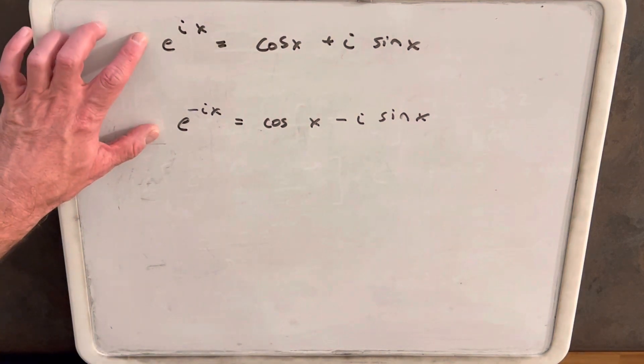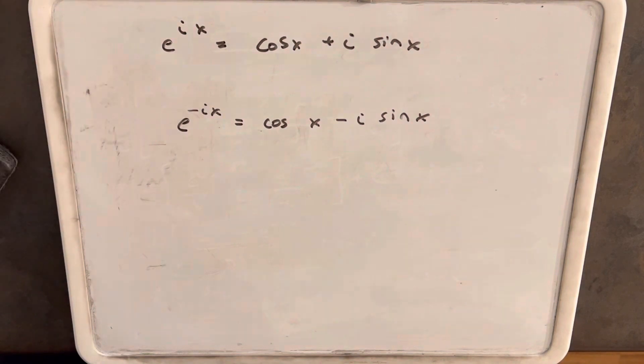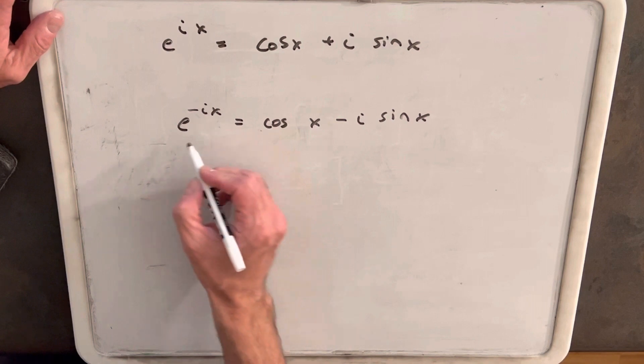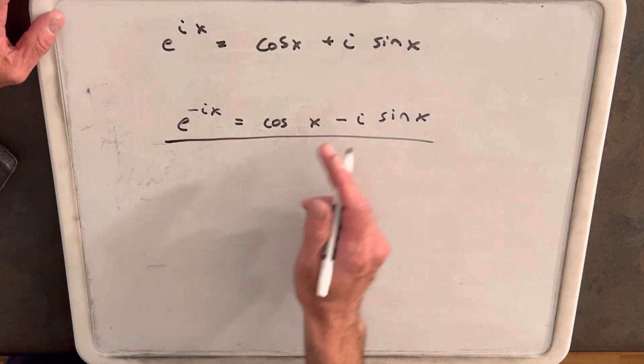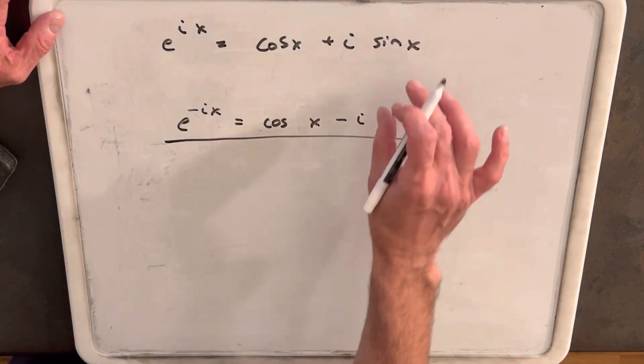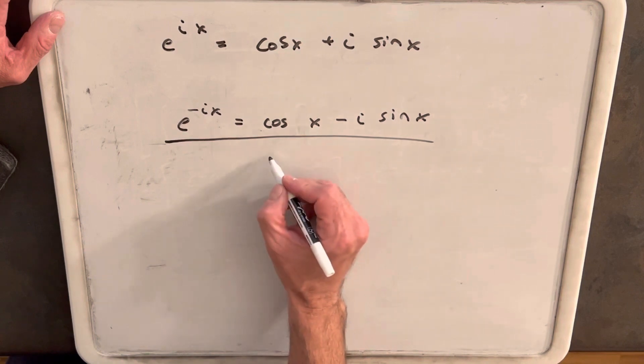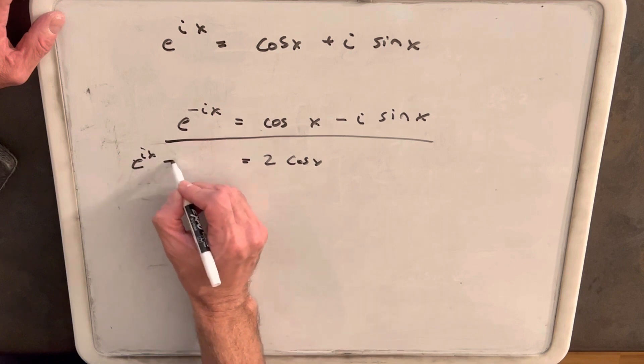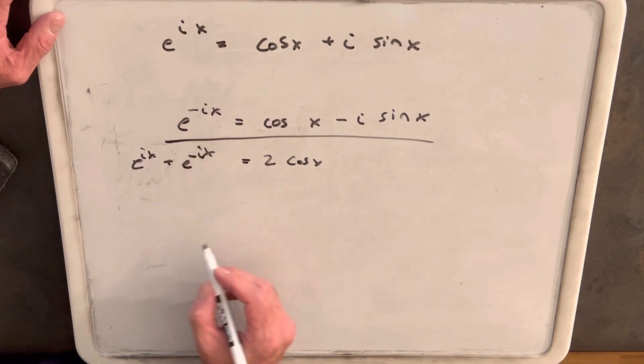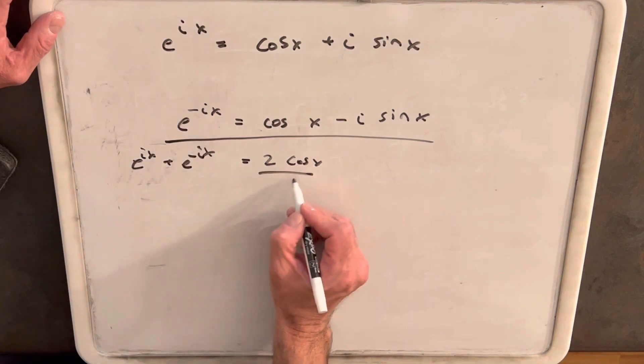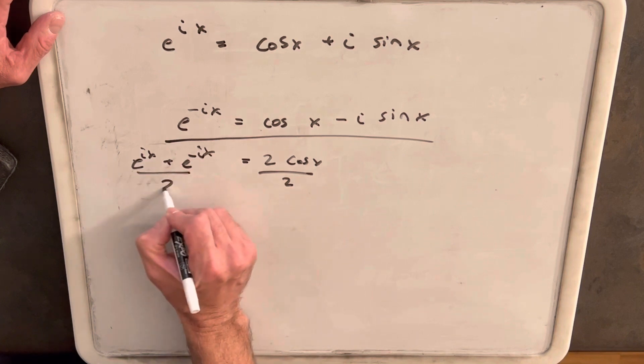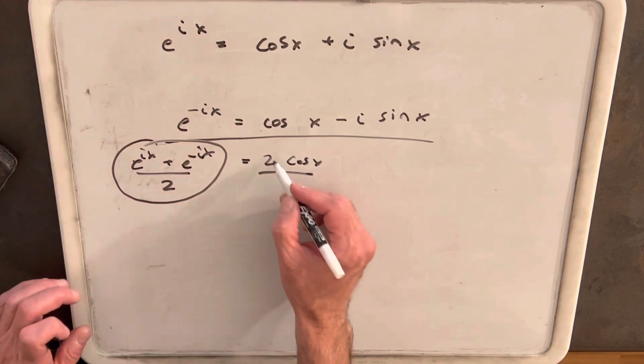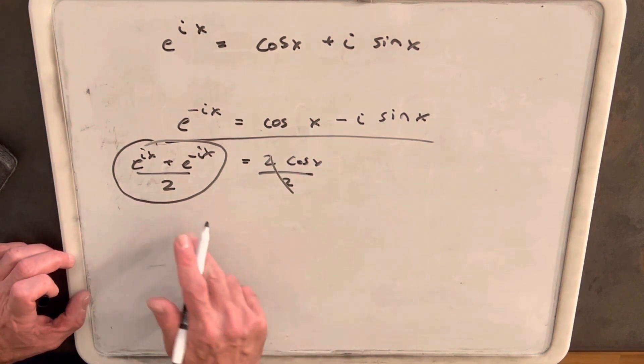But with just these two formulas here, we can do some very simple algebra and solve for sine x and cosine x. So first, let's add these two equations together. You'll notice that the sine piece cancels, and we have a 2 cos x. And this is going to equal e to the ix plus e to the negative ix. And then, dividing by 2, we get our original integral. So this is what we have for cosine of x.